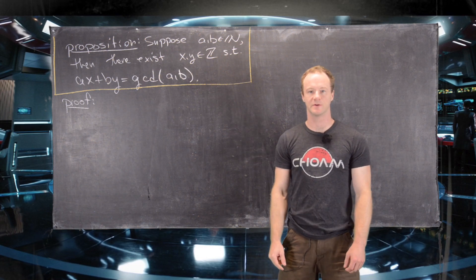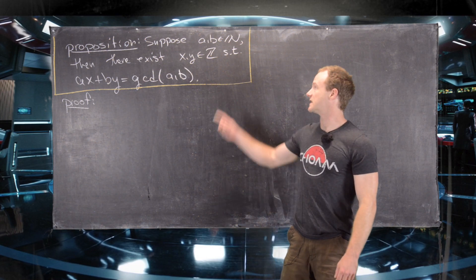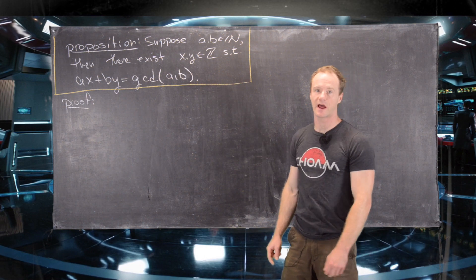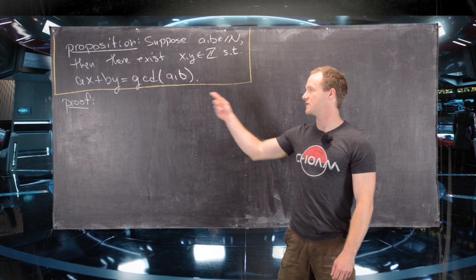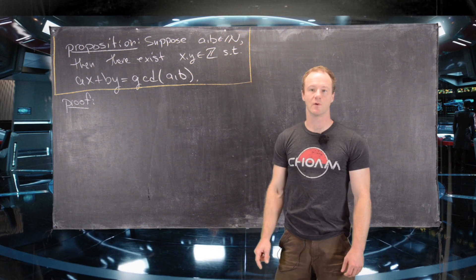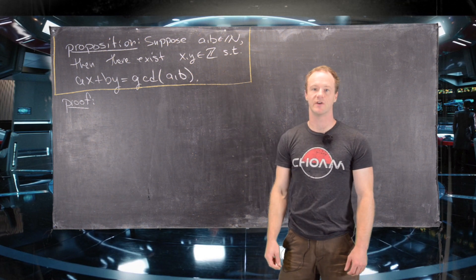Here we're going to look at this classic result from elementary number theory. It says that suppose A and B are natural numbers, then there exist X and Y in the integers such that AX plus BY is equal to the GCD of A and B.